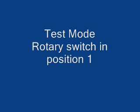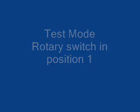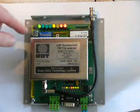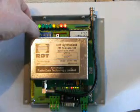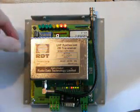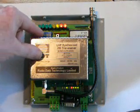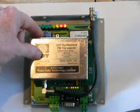In position 1 we have test mode. With DIL switch 1 on, the unit transmits — notice the yellow transmit light comes on.